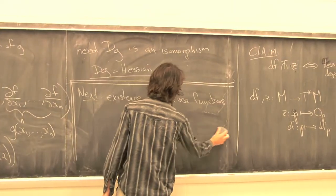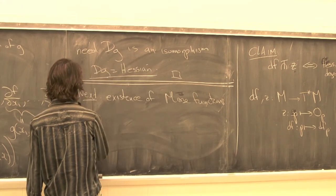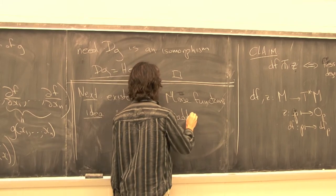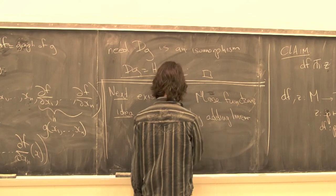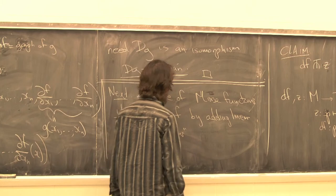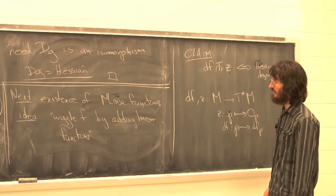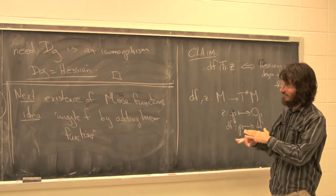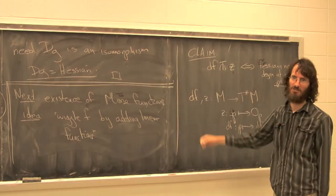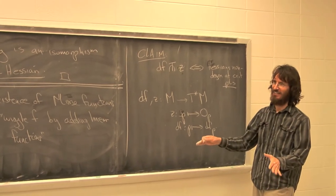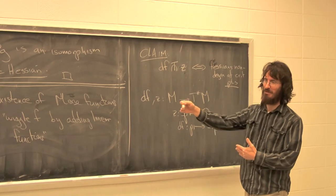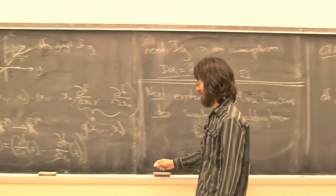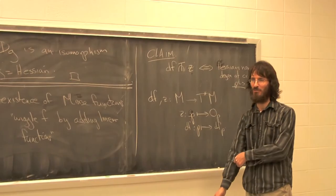The goal is to wiggle f so that Df ends up being transverse. The idea is to wiggle f by adding linear functions. There are two issues: one is to show that locally you can make it transverse by adding a linear function in local coordinates. The second is that linear functions aren't bump functions — you have to cut them off if you want to do this globally on a manifold.